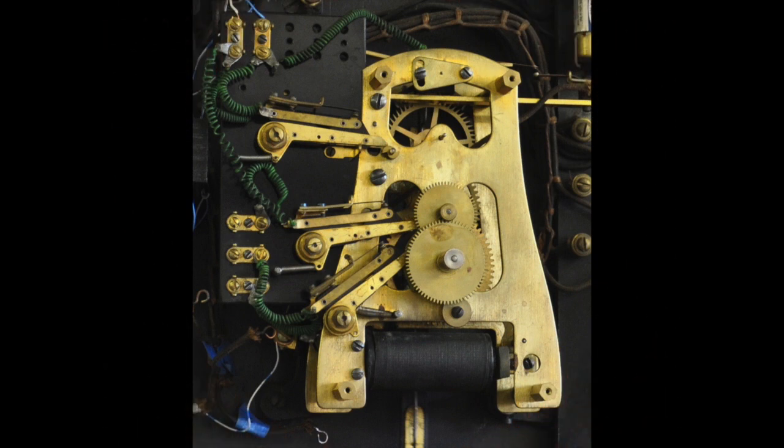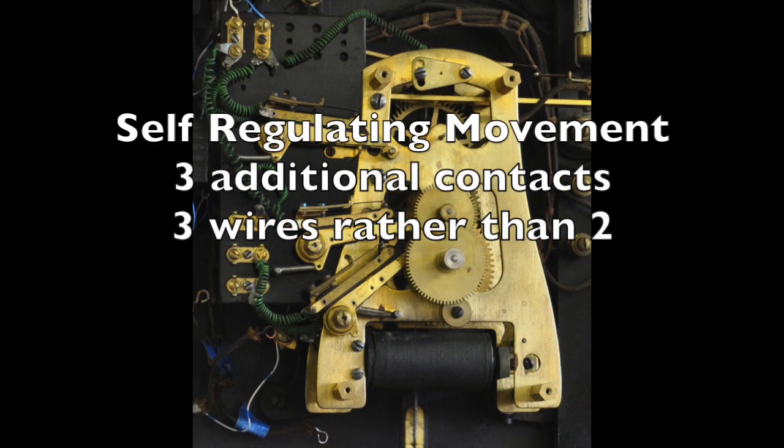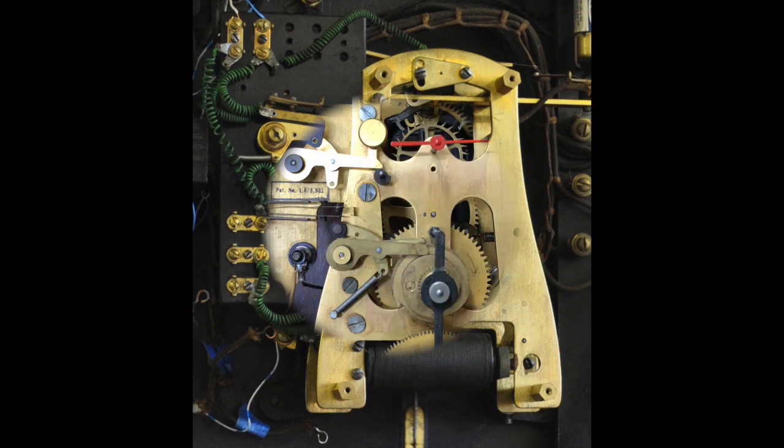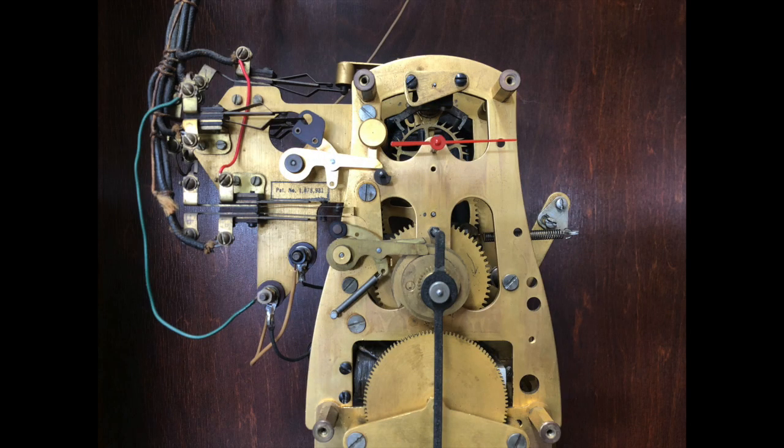This is a master with an early version of the self-regulating movement. The self-regulating movement required three additional contacts and the slaves were connected to the master with three wires. This is the latest version of the self-regulating movement.